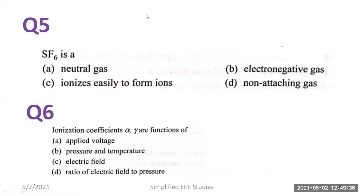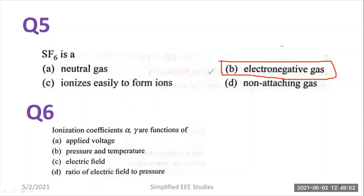Moving on to question number five: sulfur hexafluoride (SF6) is — a natural gas, an electronegative gas, ionizes easily to form ions, or a non-attaching gas — which could be the right answer? The right answer is that SF6 is basically an electronegative gas, so I can go for option B.